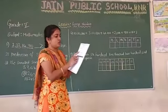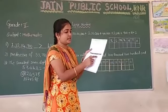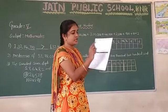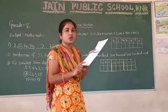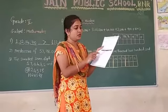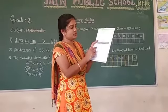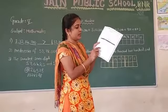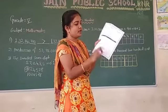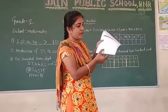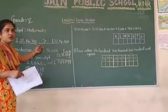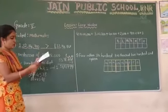Next question: write the place value of the underlined digit. I have already explained place value in Worksheet 1, so go through that and solve this question. Then fill in the blank boxes using greater than or lesser than symbols for comparison of two numbers, which I have also explained.